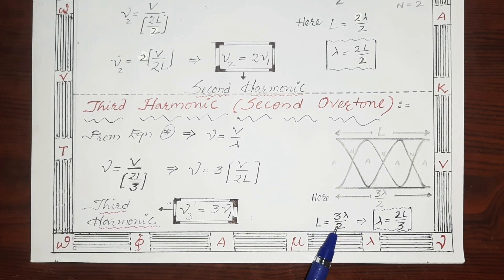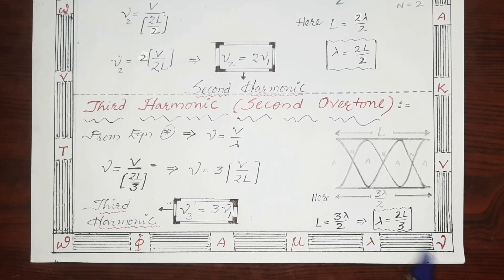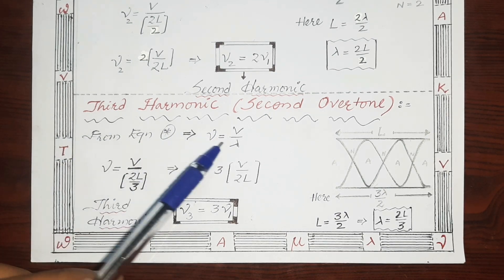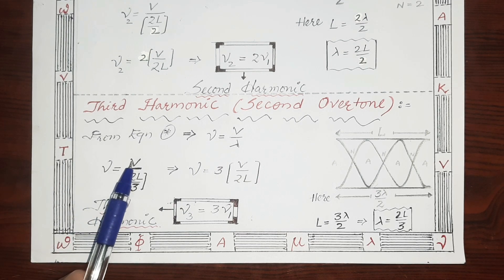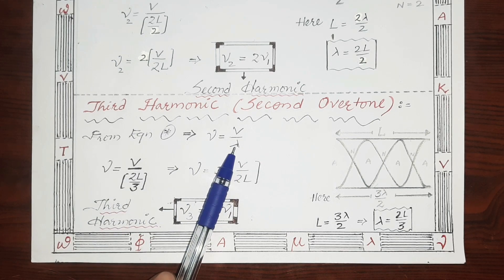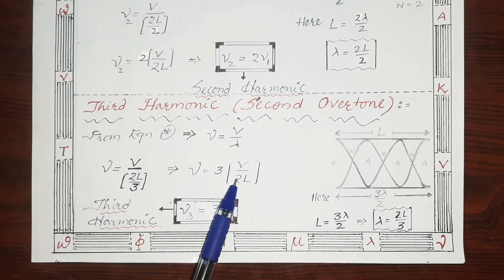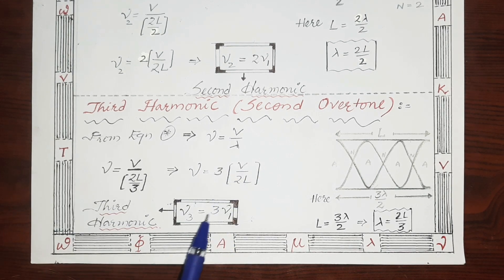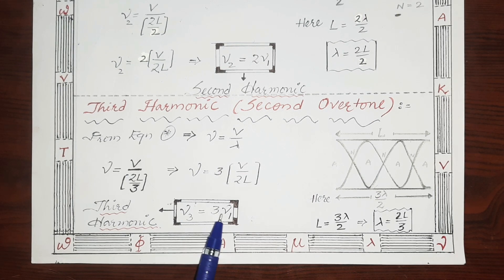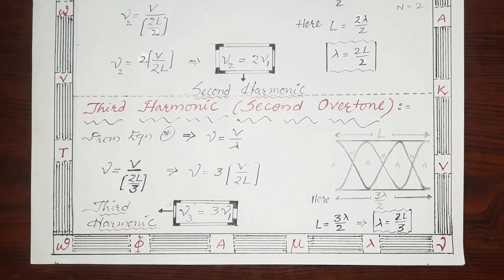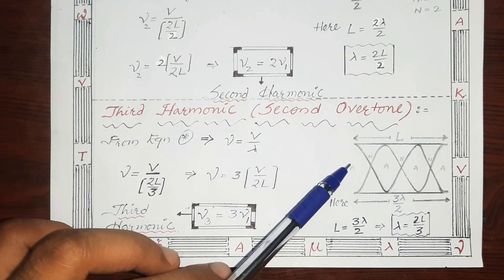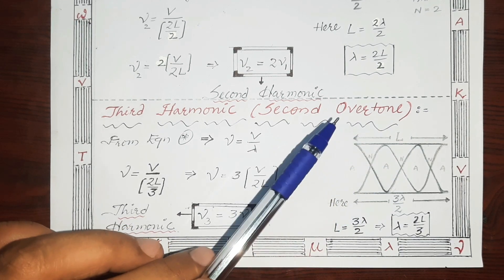From L = 3λ/2, we find λ = 2L/3. Using the wave equation ν = V/λ and substituting λ = 2L/3, we get ν = V/(2L/3) = 3 × (V/2L) = 3ν₁. So ν₃ = 3ν₁, meaning the third harmonic or second overtone is three times the fundamental frequency. This is the next possible frequency in case of an open pipe.